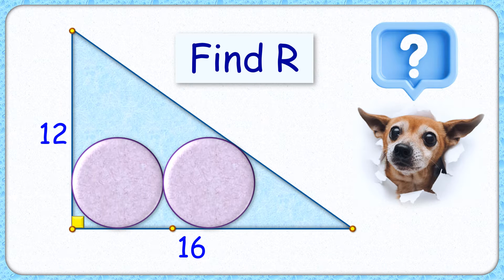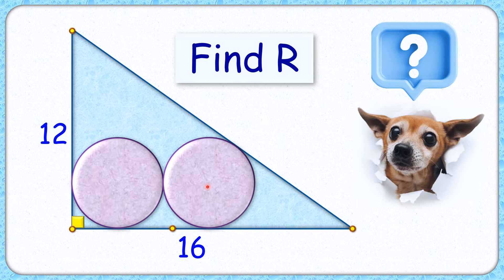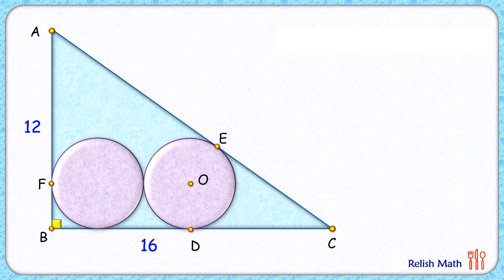This interesting question: we have a right-angled triangle with side lengths 12 and 16 cm. Inside it we have two congruent circles which are touching the sides of the triangle. The exciting part is that with this limited data we have to find the radius of the circle. Let's check this simple solution.